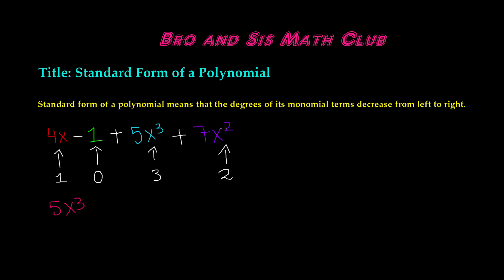5x cubed, then we have plus 7x squared, then we have plus 4x, and then we have minus 1. So the standard form of this polynomial is 5x cubed plus 7x squared plus 4x minus 1.